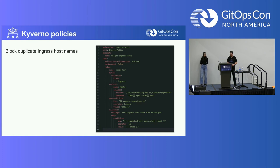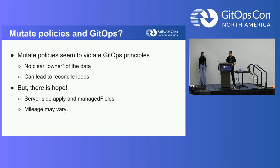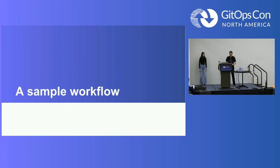One note: mutate policies and GitOps can sometimes conflict, because with GitOps the whole idea is Git as your source of truth. You can mutate certain elements, but you have to make sure your GitOps controller can exclude those and you don't get into a reconcile loop. With newer features like Flux server-side apply — and Argo CD adding that feature — policy engines can now claim ownership of certain fields within a resource manifest. There are ways to work around this, but be careful when adopting mutate policies.